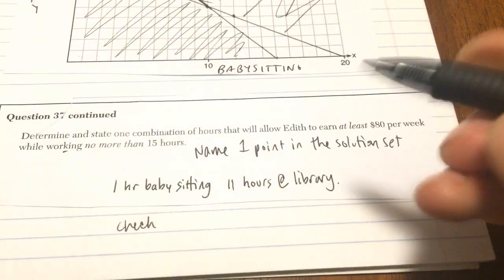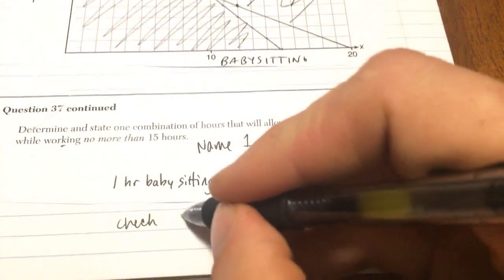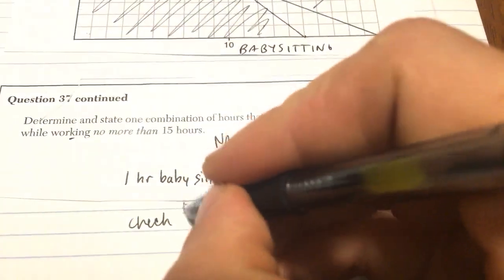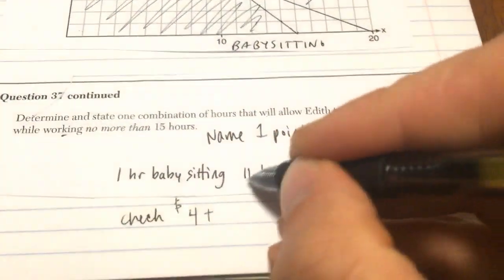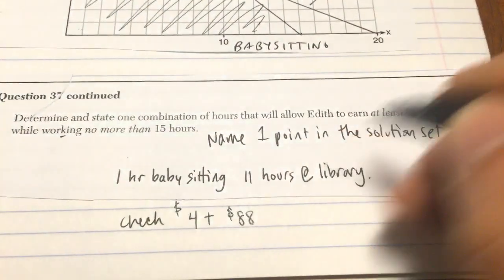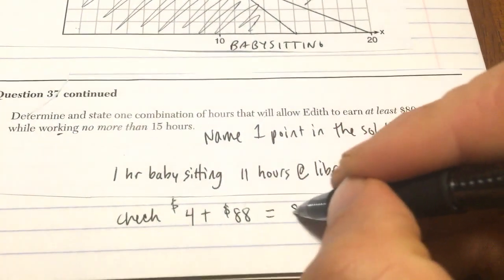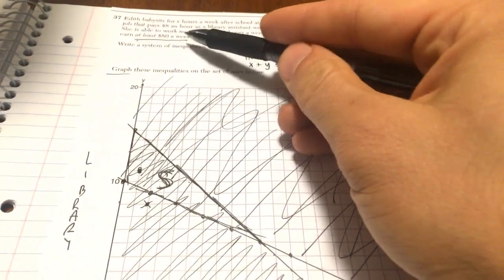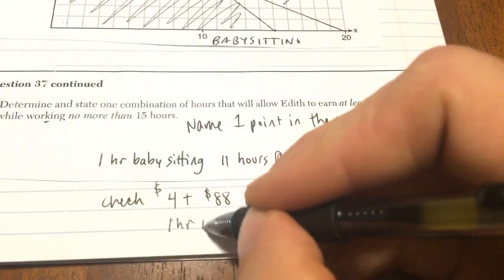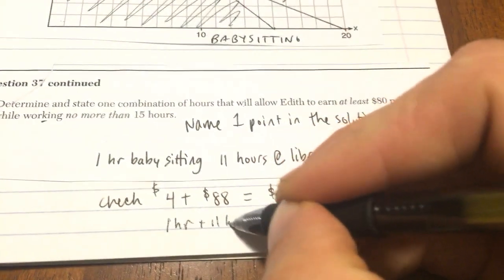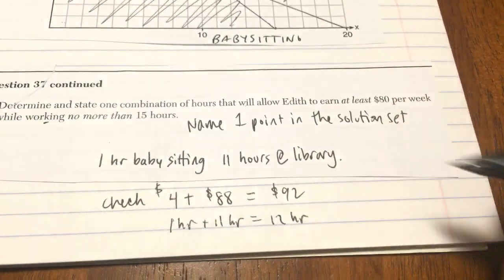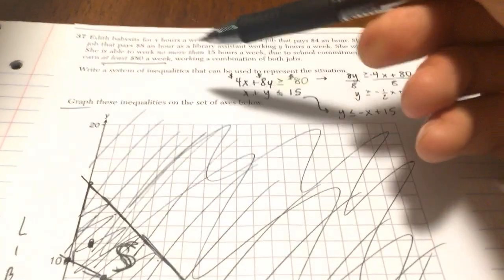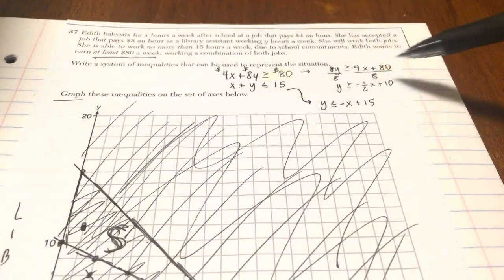And to check ourselves, we know that we made $4 an hour babysitting plus $8 an hour at the library for a total of $92. She wanted to earn at least $80 a week. That one hour plus 11 hours was only 12 hours — she told us that she didn't want to work any more than 15. Thank you.